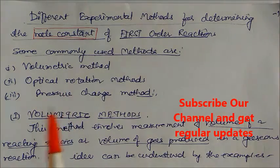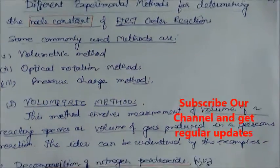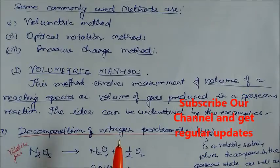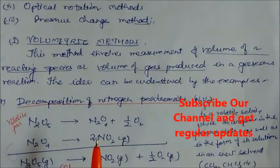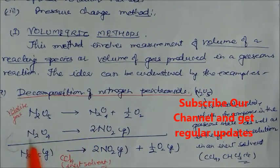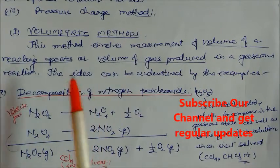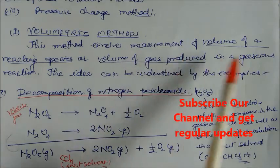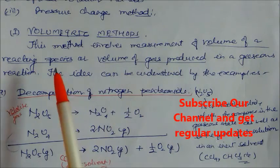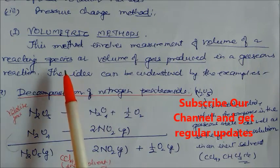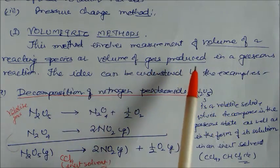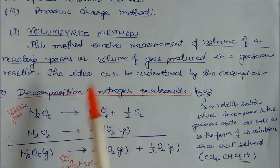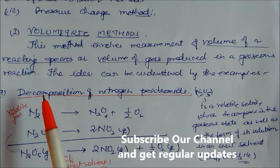Let us look at the volumetric method first. In this method, it involves the measurement of the volume of a reacting species or the volume of the gas produced in a gaseous reaction.